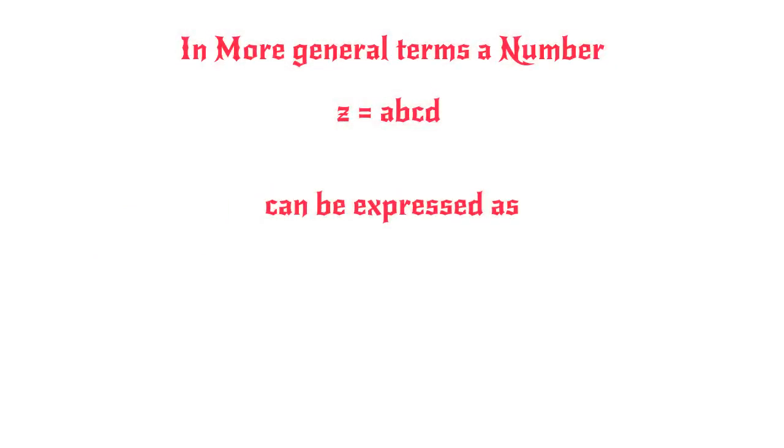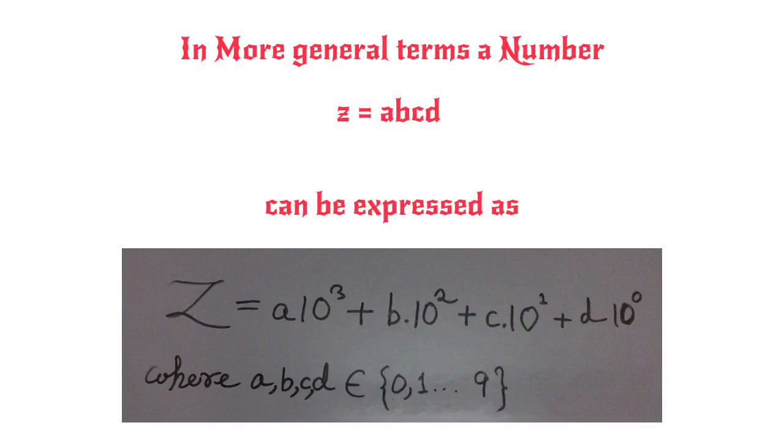In more general terms, a number z equals abcd can be expressed as z equals a times 10 to the power 3 plus b times 10 squared plus c times 10 to the power 1 and d into 10 to the power 0.